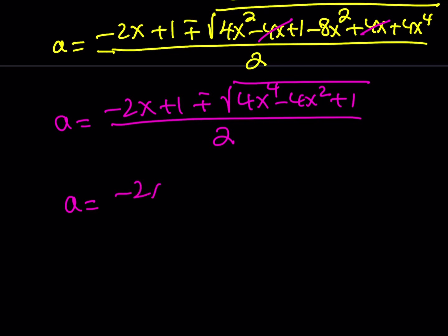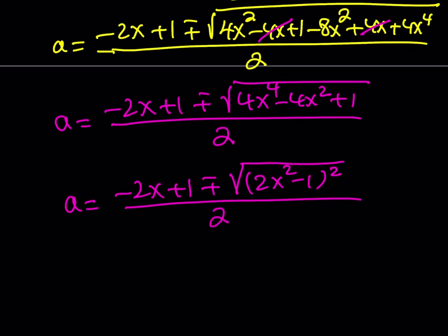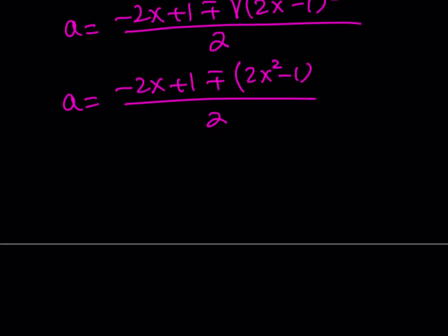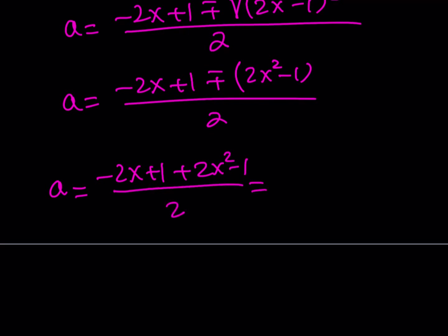Since the square root of (2x squared minus 1) squared is just (2x squared minus 1), and we already have a plus-or-minus, we get: (negative 2x plus 1 plus or minus (2x squared minus 1)) all over 2. Taking the plus sign: (2x squared minus 2x) over 2, which simplifies to x squared minus x. So that's one value of a.